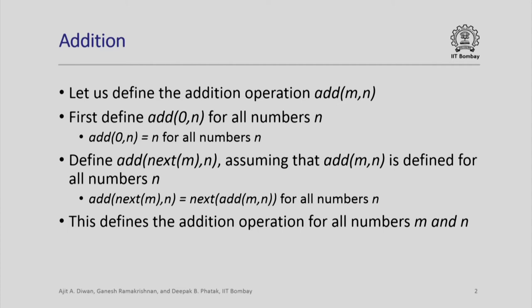In general, to define any operation, we need to define it for the case when the value is 0, and then assuming it is defined for the case where the value is m, we need to define it for the value next(m). If that is done, then it gets defined for all possible values of the number m. So for add(0, n), when m is equal to 0, we define the value to be n itself for all numbers.